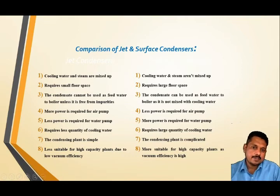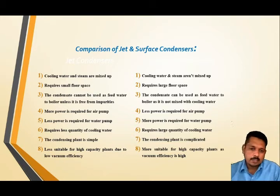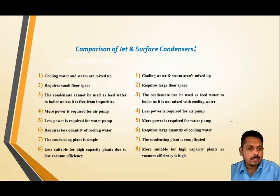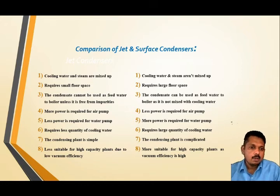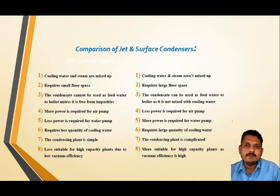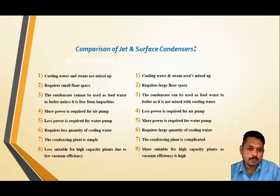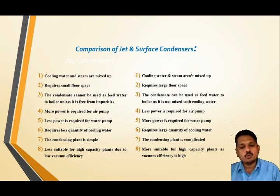Now let's see the comparison of jet and surface condensers. In a jet condenser, cooling water and steam are mixed, whereas in a surface condenser they are not mixed. Jet condensers require small space while surface condensers require large space. The condensate cannot be used as feed water in a jet condenser, but in a surface condenser it can. More power is required for air pumping in a jet condenser because air is blown in to help cool the vapors quickly, whereas less power is required for air pumping in a surface condenser since the system is isolated and cold water is fed directly.